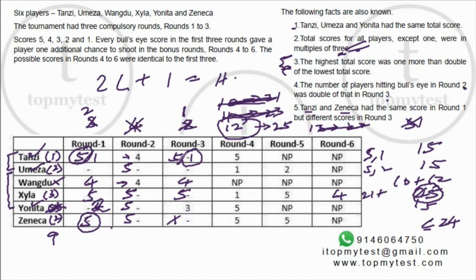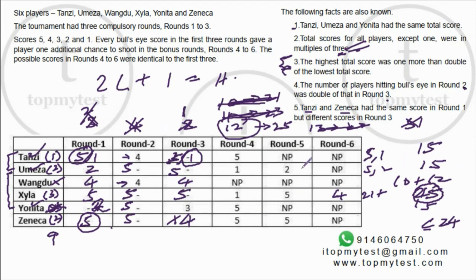Since Tanzi scored 5 in round one, his round-three score must be 1 (to total 15). Zeneca cannot score 1 in round three. Zeneca's total so far is 20; he needs a multiple of three and the only remaining multiple of three available is 24. So Zeneca scores 4 in round six. The last remaining bullseye allocation goes to Umeza in round three. With all data filled, we can now answer all questions.